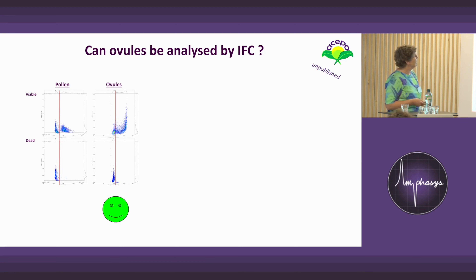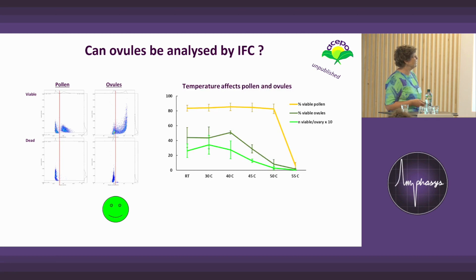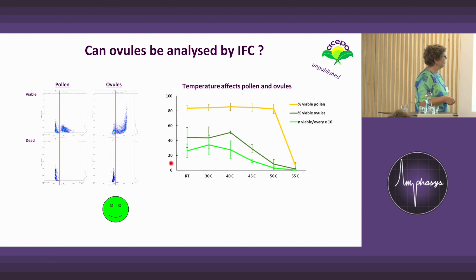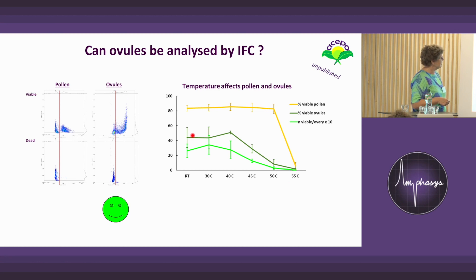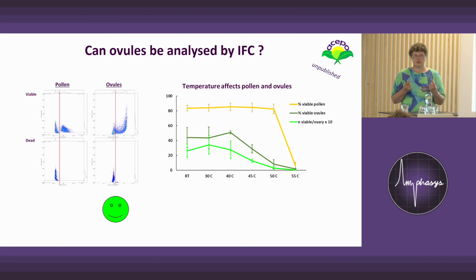Because I like temperature experiments, here you can see that pollen from the species drops about 50% in viability at 50 degrees. But when I isolate ovules and treat them with heat, they are actually more sensitive than the pollen. So with all these heat experiments, it may not only be pollen that goes down the drain — ovule viability may also be affected.